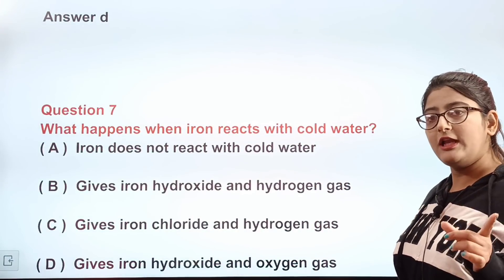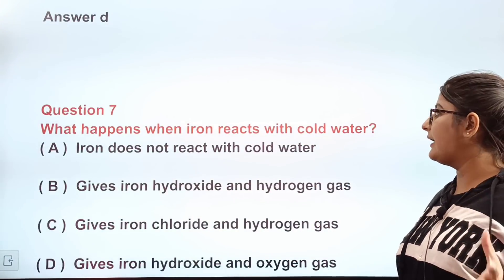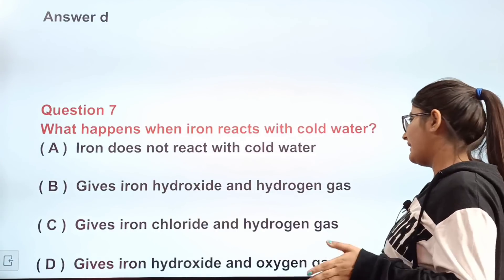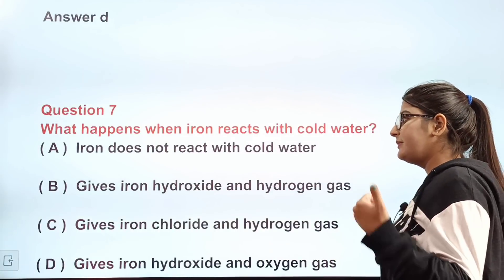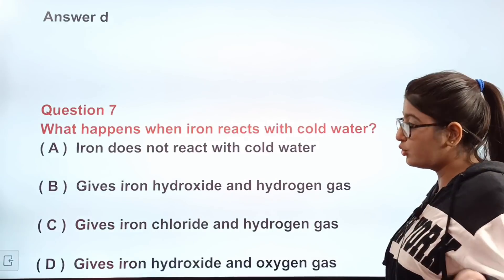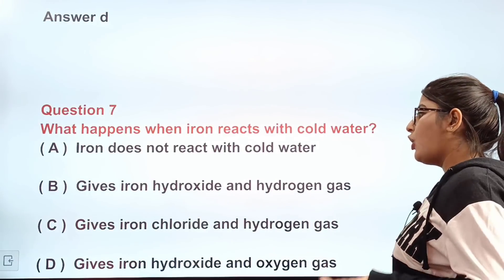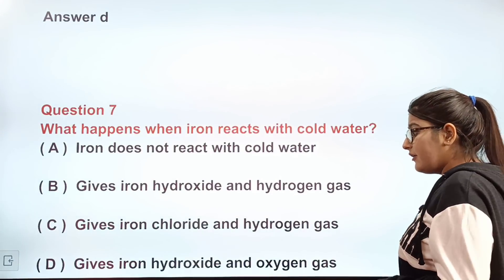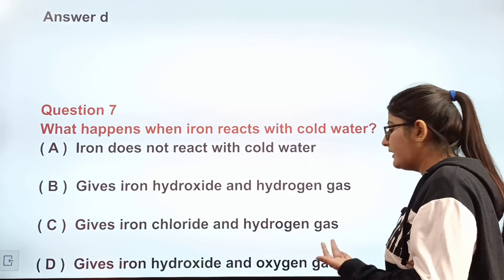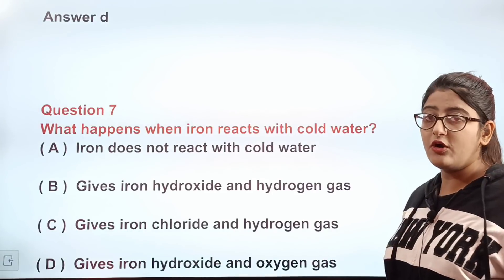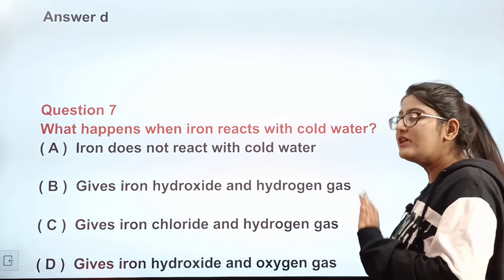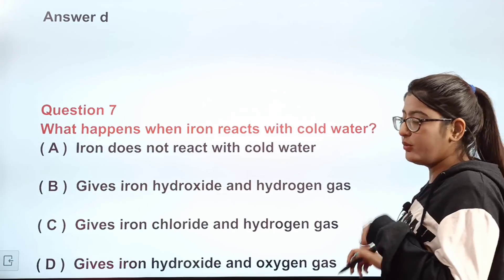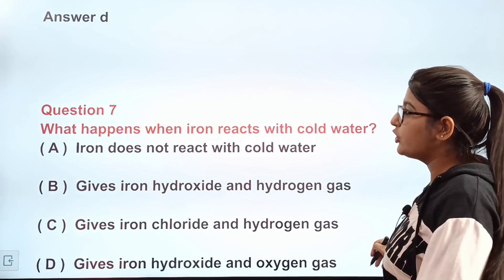Question number seven: what happens when iron reacts with cold water? A) Iron does not react with cold water; B) gives iron hydroxide and hydrogen gas; C) gives iron chloride and hydrogen gas; D) gives iron hydroxide and oxygen gas. The correct answer is A — iron does not react with cold water.